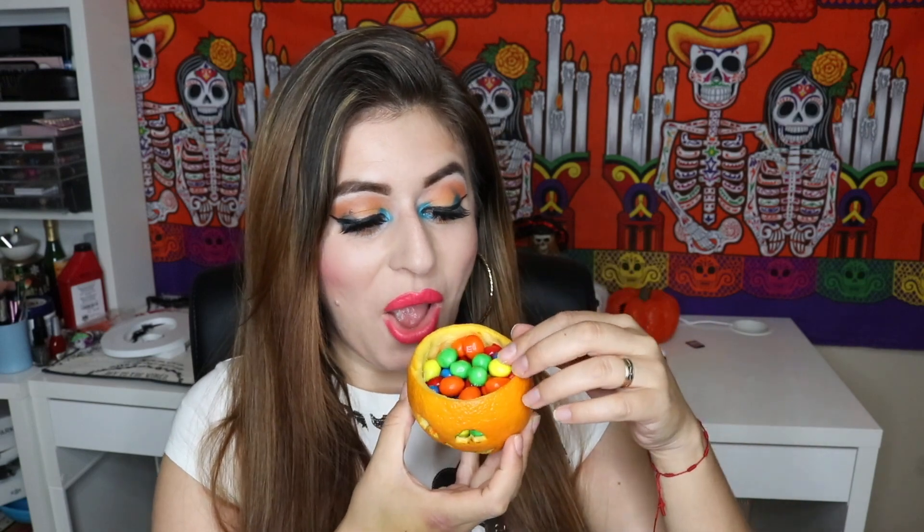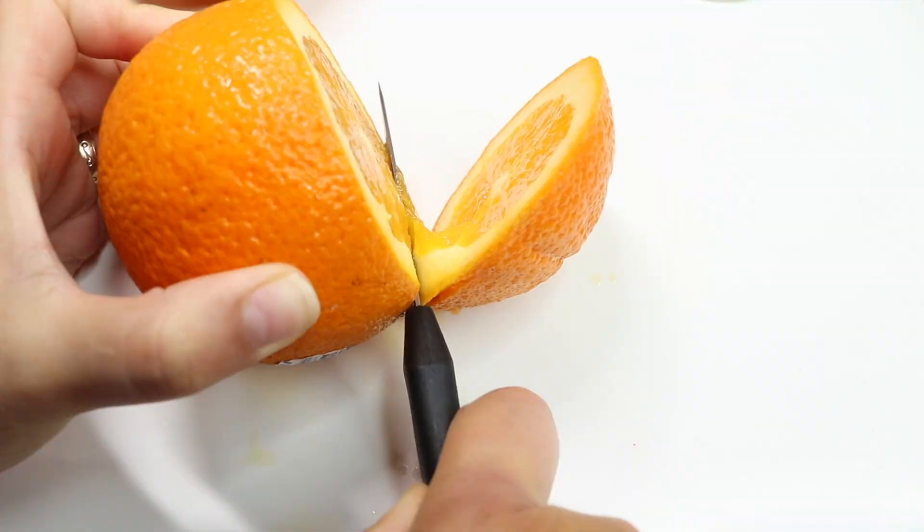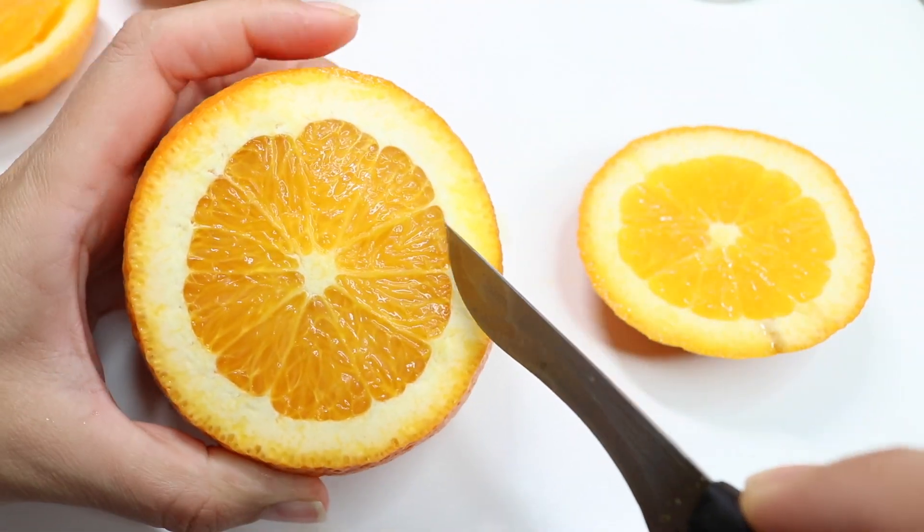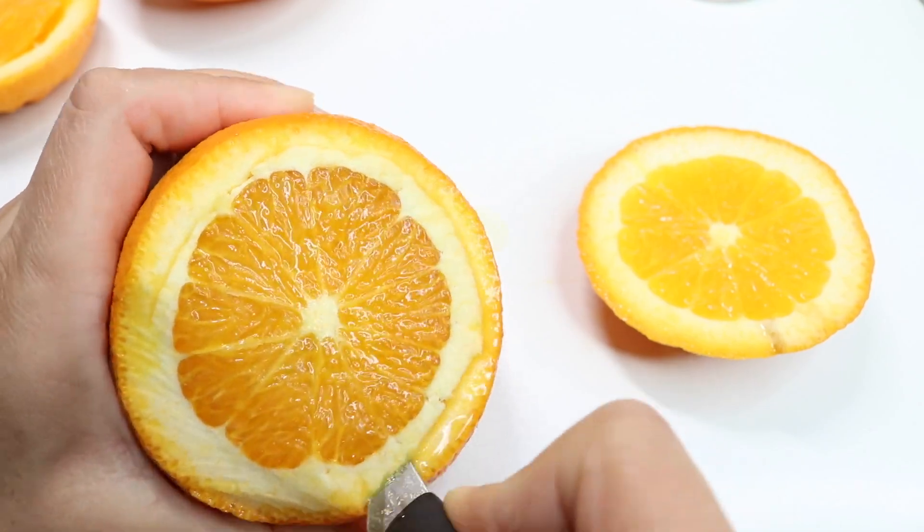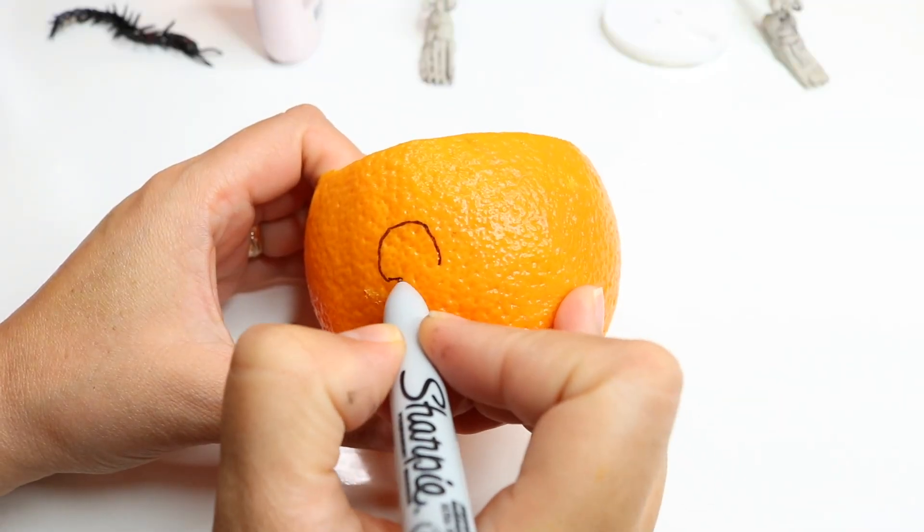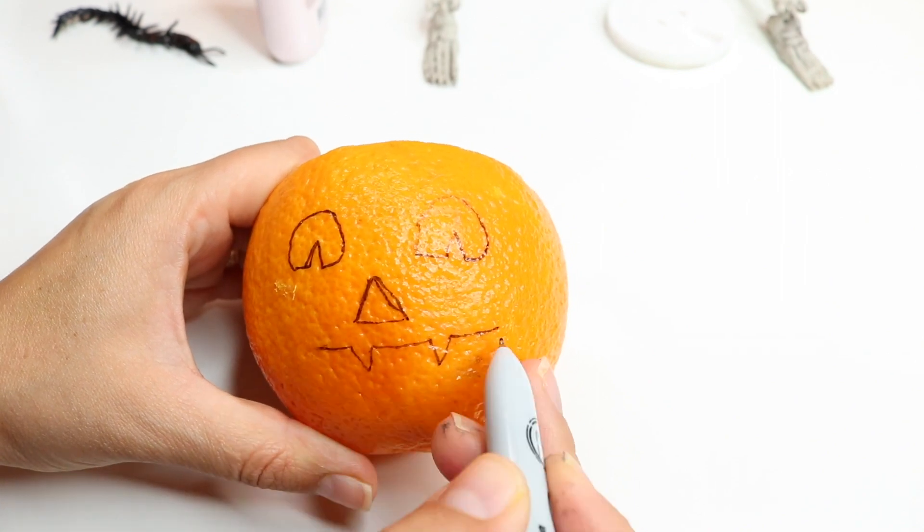For this fourth hack you're going to be taking an orange. You're going to be using a knife and be very very careful with this. Take out the orange inside, then you're going to grab a marker and draw a pumpkin face. Shape it or cut it out with a knife as well, but be very careful with this because you don't want to cut your fingers.